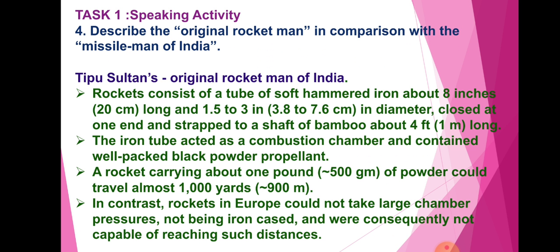Describe the original rocket man in comparison with the missile man of India. Tipu Sultan, original rocket man of India: rockets consisted of a tube of soft iron about 8 inches (20 cm) long, 1.5 to 3 inches (3.8 to 7.6 cm) in diameter, closed at one end and strapped to a shaft of bamboo about 4 feet (1 meter) long. The iron tube acted as a combustion chamber and contained well-packed black powder propellant. A rocket carrying one pound (500 grams) of powder could travel along 1,000 yards (900 meters). In contrast, rockets in Europe could not take larger chamber pressure, were not iron-cased, and were consequently not capable of reaching such distances.